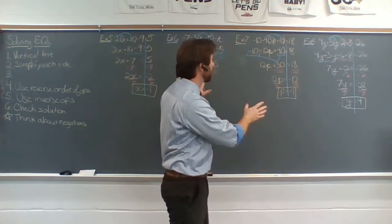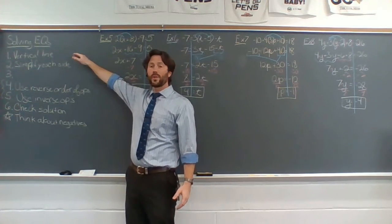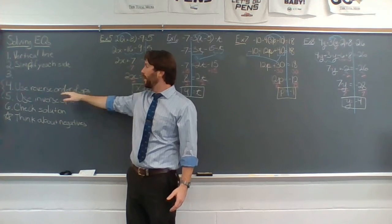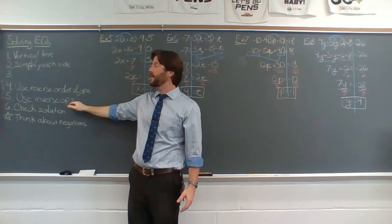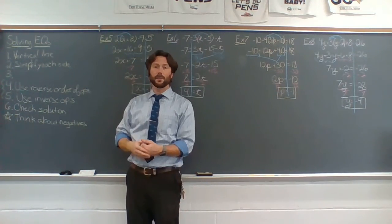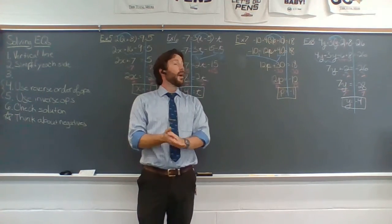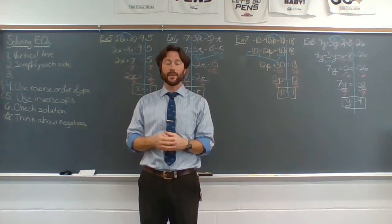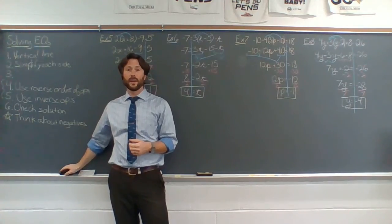Now guys, these equations might look a little bit different from yesterday, but they're really all the same. We draw the vertical line down the middle, we simplify each side, we use reverse order of operations and inverse operations to get the variable by itself, and check your answer. The only difference is yesterday we didn't have to simplify each side because they were already simplified — now we do. There's an assignment posted to Canvas, and this video is posted to Canvas. If you have any questions at all, please make sure you contact me. I look forward to hearing from you. Thank you.